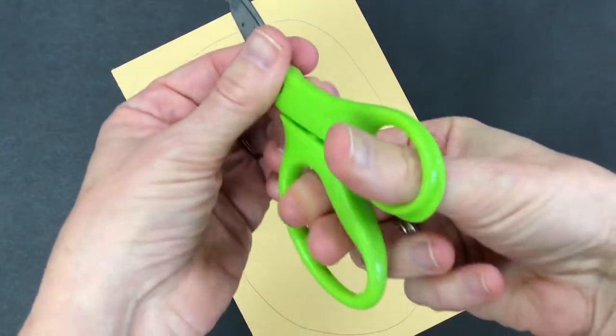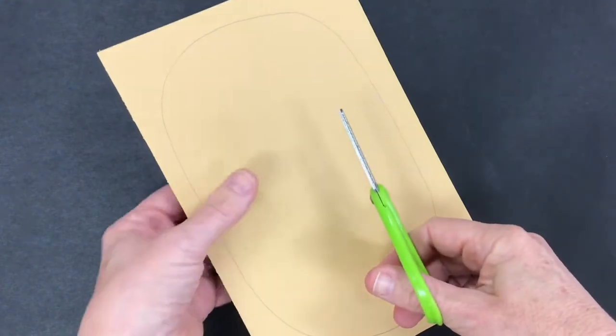First take your scissors. Make sure you put your thumb in the little hole and your fingers in the big hole.